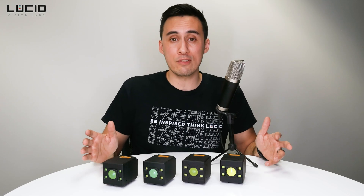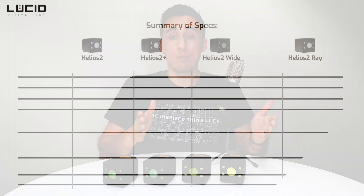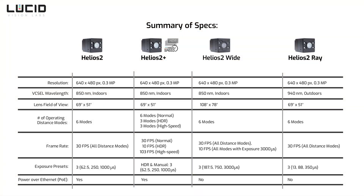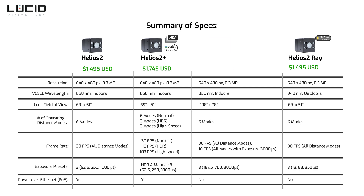So what does all this information mean? Let's compare it to model pricing. If you're looking for the absolute best 3D data with an indoor application and controlled lighting, the Helios II Plus using HDR mode is your best choice, priced at $1,745 USD. The regular Helios II offers excellent performance without HDR and high-speed mode at a more cost-effective $1,495. If your application needs to image objects in sunlight or involves a mobile 3D application moving between outdoor and indoor lighting, choose the Helios II Ray. And if you want to image the maximum area with the fewest 3D cameras, the Helios II Wide is your model.